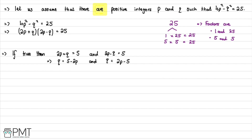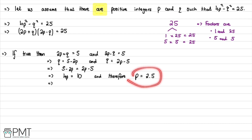Equating the two expressions for Q: 5 − 2P = 2P − 5. Adding 2P and 5 to both sides gives 4P = 10, so P = 2.5. Substituting back, Q = 2(2.5) − 5 = 5 − 5 = 0.